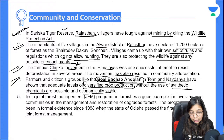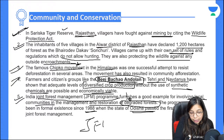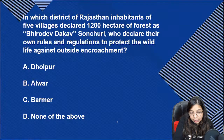The Chipko Movement inspired similar movements across India. Farmers in Tehri and Navdanya region conducted the Beej Bachao Andolan — they did diversified crop production without synthetic chemicals, which also kept the soil nourished naturally and was economically viable. The Joint Forest Management program, important since 1988, involves local communities in the management and restoration of degraded forests.